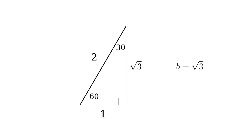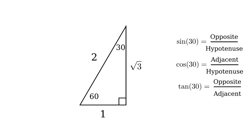And let's remember our trig definitions and plug in 1 for the opposite and square root of 3 for adjacent and 2 for the hypotenuse. And there we have it. Values for sine, cosine, and tangent of 30 degrees.